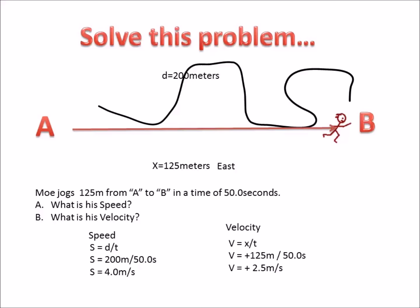Now you know the difference between distance and displacement. Distance is the total length of the path traveled. Displacement is the straight line distance and direction between the origin and the ending point.